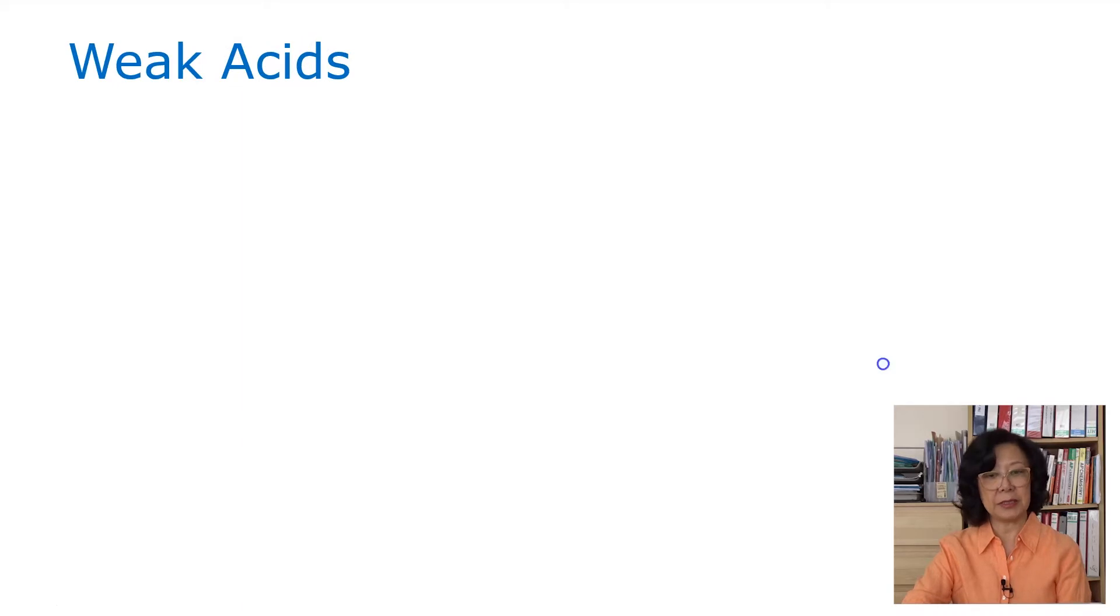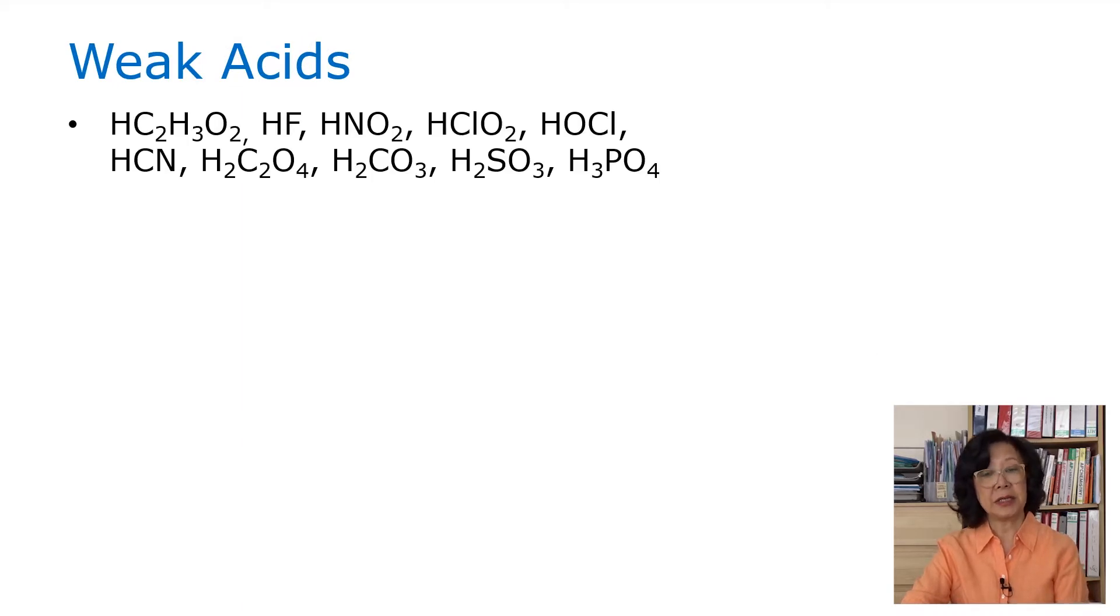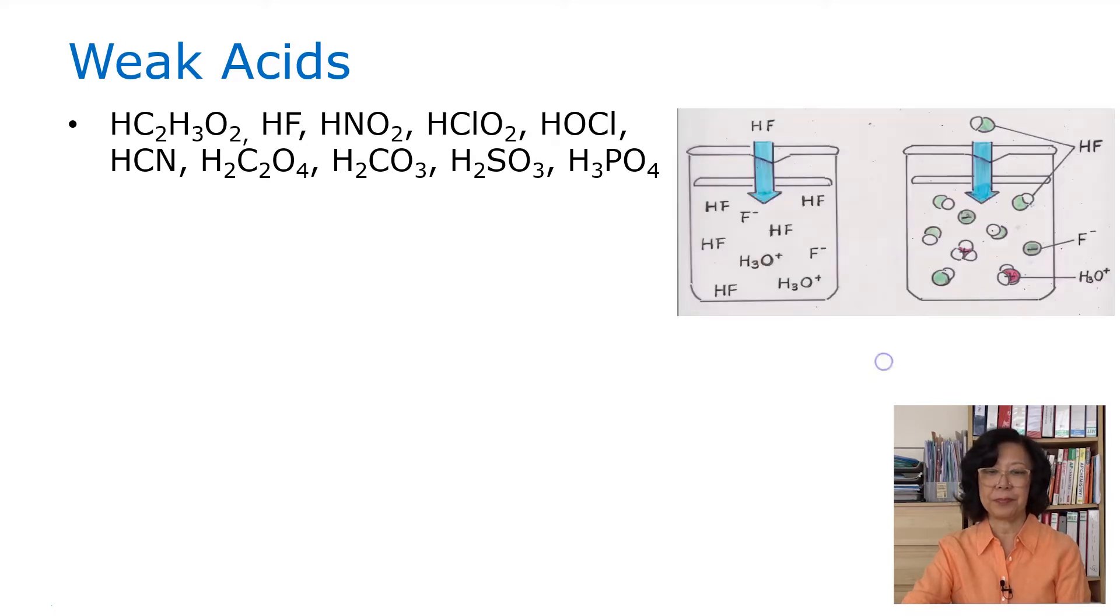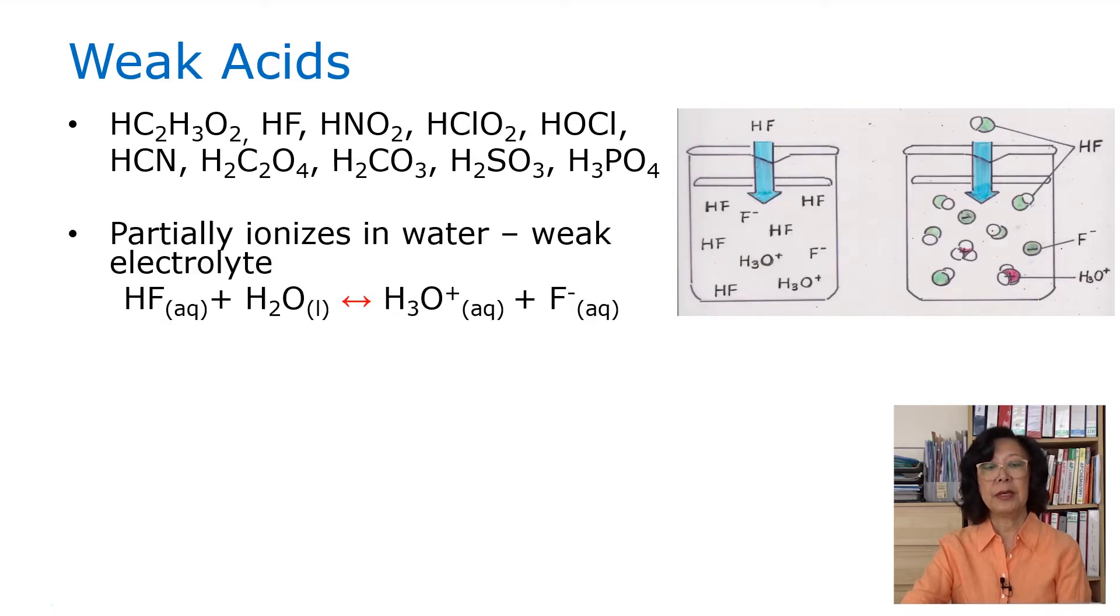The weak acids. Typically, these are acetic acid, hydrofluoric acid, nitrous acid, chlorous acid, hypochlorous acid, hydrocyanic acid, oxalic acid, carbonic acid, sulfurous acid, and phosphoric acid. They ionize partially in water, forming a few ions. Therefore, it is an equilibrium situation. Notice that we have a red arrow going forward and in the reverse manner. There are very few ions formed. They are weak electrolytes.